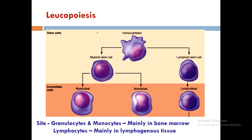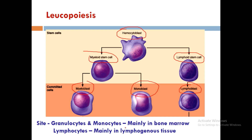Leukopoiesis is the development and maturation of different types of WBCs. It begins with the hemocytoblast or pluripotent hemopoietic stem cell, which gives rise to the myeloid stem cell and the lymphoid stem cell. The myeloid stem cell gives rise to myeloblasts and monoblasts. Myeloblasts give rise to neutrophils, eosinophils, and basophils; monoblasts give rise to monocytes. Granulocytes and monocytes form mainly in the bone marrow, while lymphocytes form mainly in lymphogenous tissue.